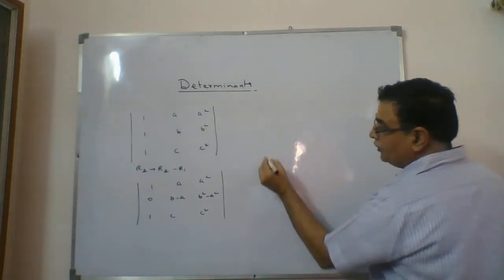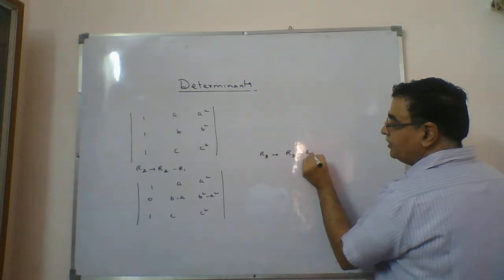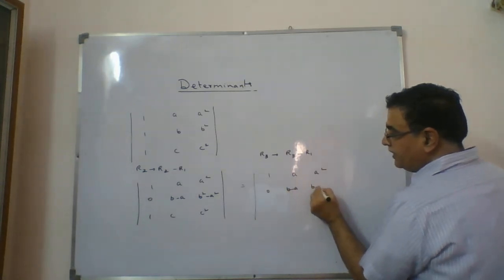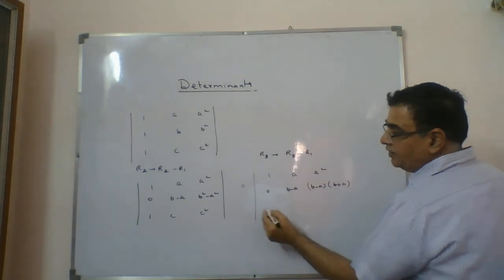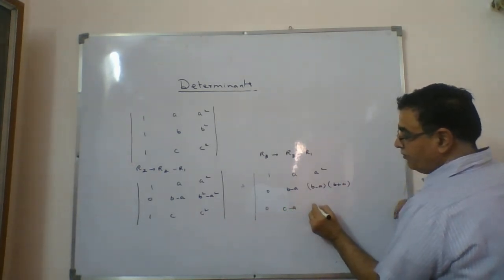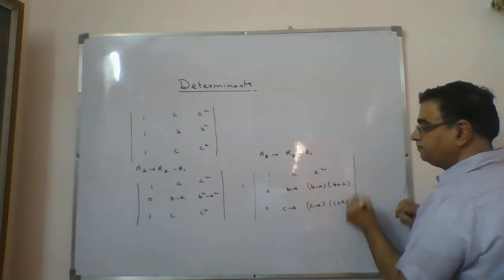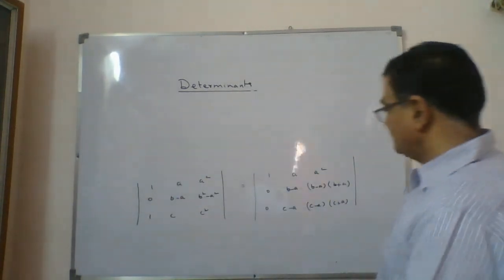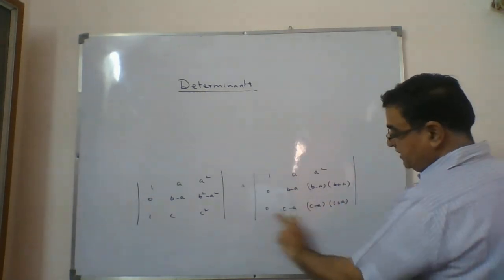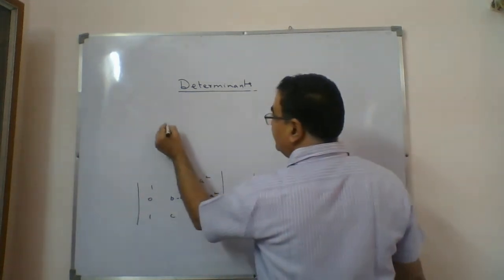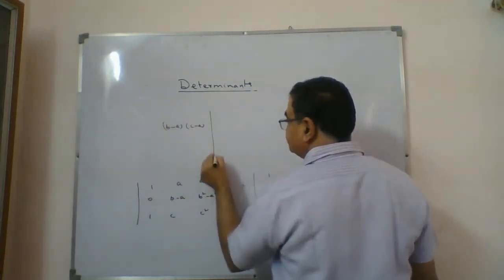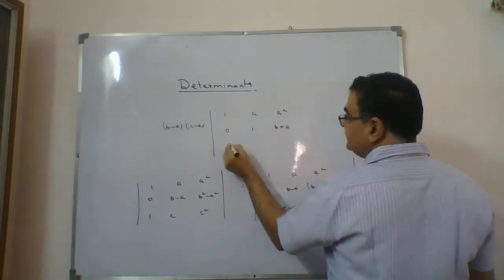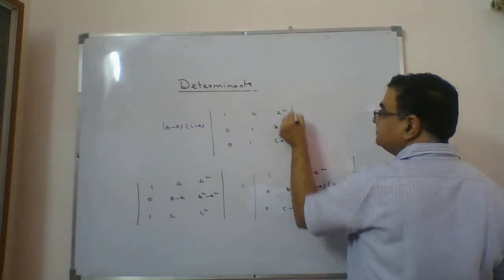Then R3 minus R1 gives another zero. Result: row 1 is 1, a, a²; row 2 is 0, b-a, b²-a² which is 0, (b-a), (b-a)(b+a); row 3 is 0, c-a, c²-a² which is 0, (c-a), (c-a)(c+a). Now take (b-a) common from row 2 and (c-a) common from row 3, giving (b-a)(c-a) outside, with matrix rows 1, a, a²; 0, 1, b+a; 0, 1, c+a.